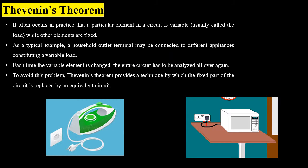Sometimes we design a system to which we connect different types of load. For example, consider the power outlet at your home to which sometimes you connect an electric iron, TV, washing machine, microwave oven, or any other appliance. Now with changing the load, if you want to analyze the circuit, you will have to repeat the calculation whenever you change the load.